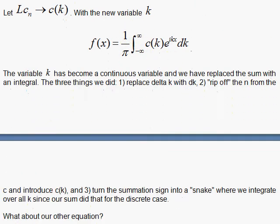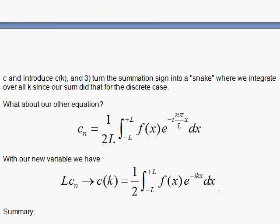What about the other equation here that goes with it? Well, this other equation that goes with that, we are going to replace piece by piece. nπ/L is k. dx stays the same. And f(x) stays the same. But L here, when coupled with c_n, that will be promoted to our function c of the continuous variable k. So that's the result.